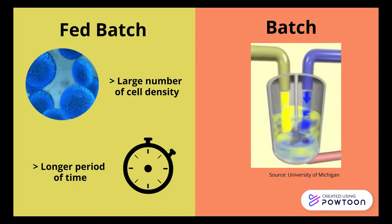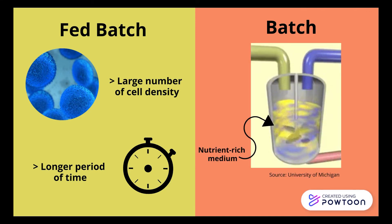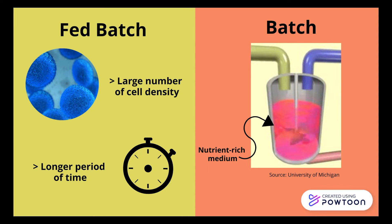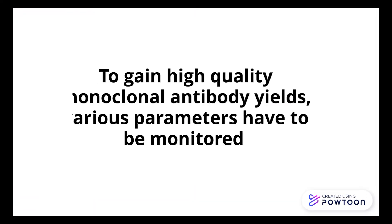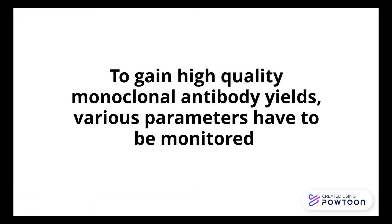The batch process consists of cells being grown in a nutrient-rich base medium at a specific volume, wherein the entire batch is then harvested once the manufacturing process is complete. To gain high-quality monoclonal antibody yields, various parameters have to be monitored in the culture.